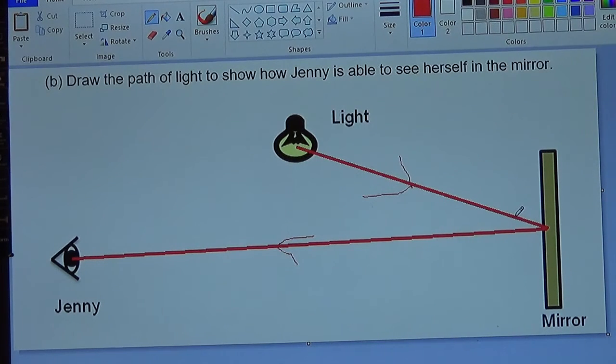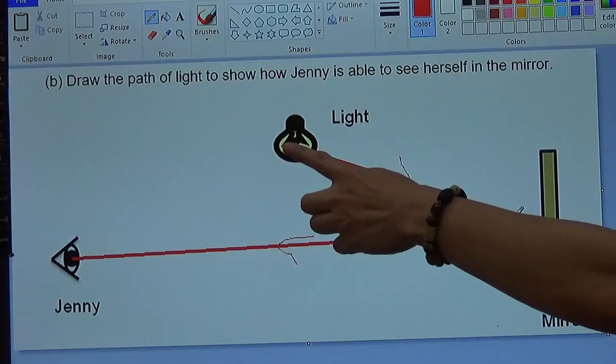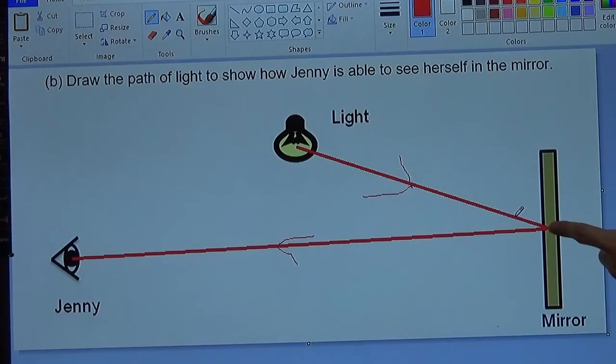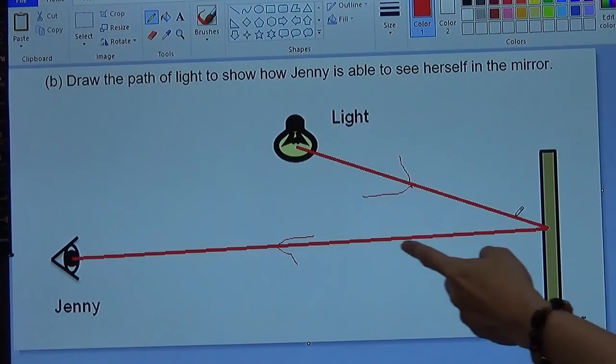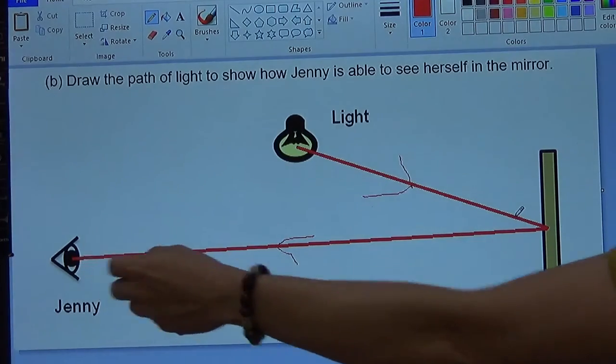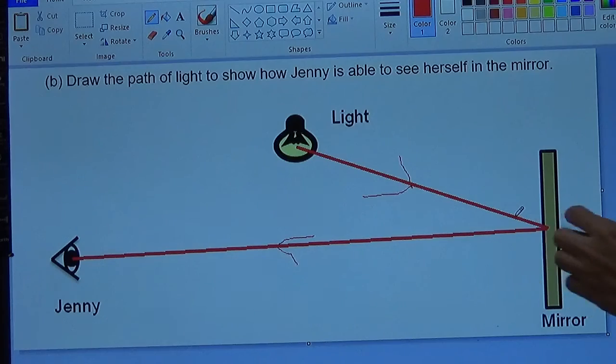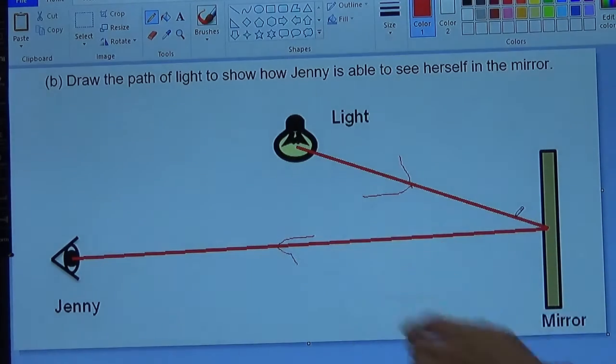Now, then you will see this way. Why is it like that? Now do you remember I said light shines onto the mirror and it gets reflected into Jenny's eyes. So you see, the light has an arrow that is pointing at the mirror and then it gets reflected into Jenny's eyes.